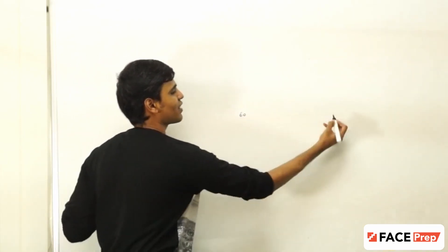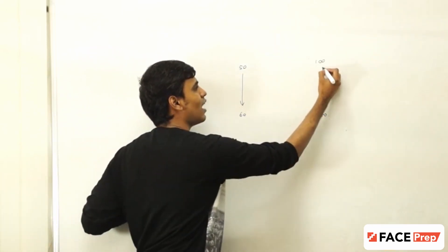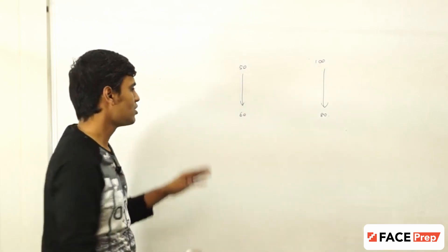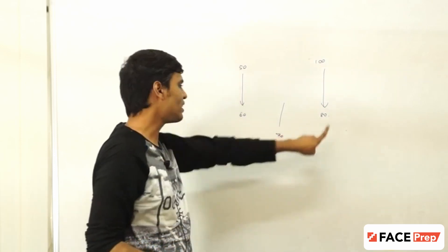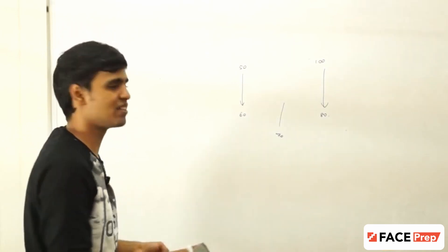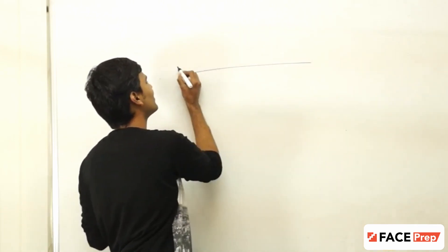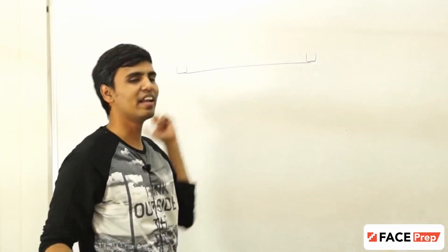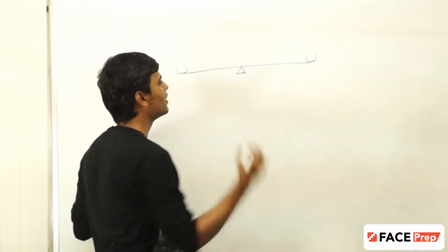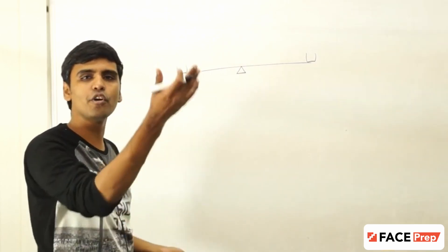That is where the concept of weight comes in. One class scored 60 marks and another class scored 80 marks. This class has 50 students — that is the weight assigned to this class. Another class has 100 students — that is the weight assigned to the other class. So will the average be 70? Obviously not, because more students have 80, so the average should move towards 80. You will understand this better once we represent it as a seesaw. So I have a rod with two seats on either side and a pivot exactly in the center.